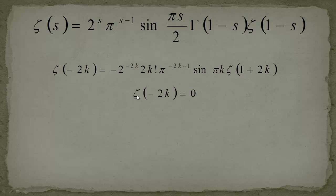It's pretty simple to see, so where we land is that ζ(-2k) is equal to 0.